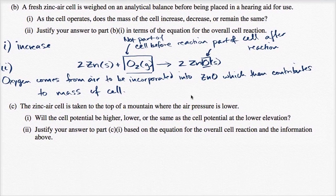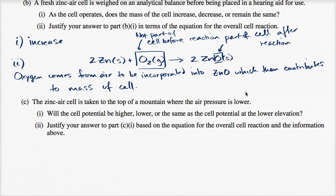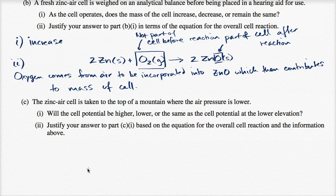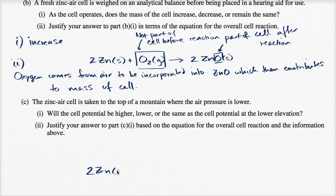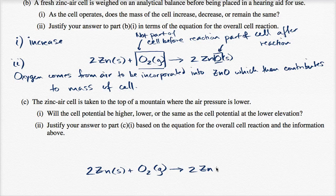Well, let me just write the overall cell reaction again. The overall cell reaction. I'll rewrite it again. So we have two zinc molecules, one molecular oxygen. We're going to have this ingrained in our brain by the time this is done. I'm writing it so frequently. We get two zinc oxides.